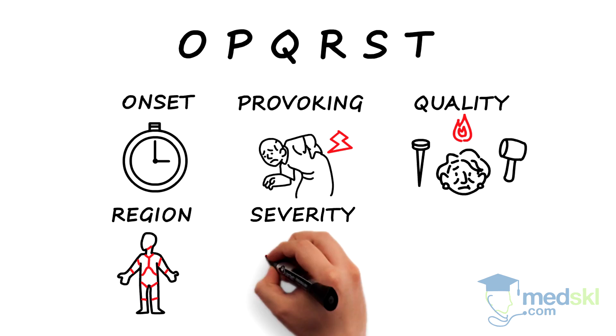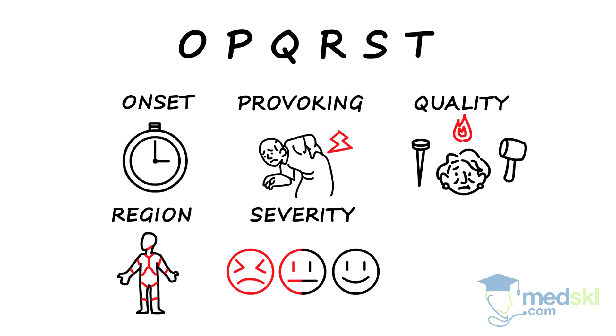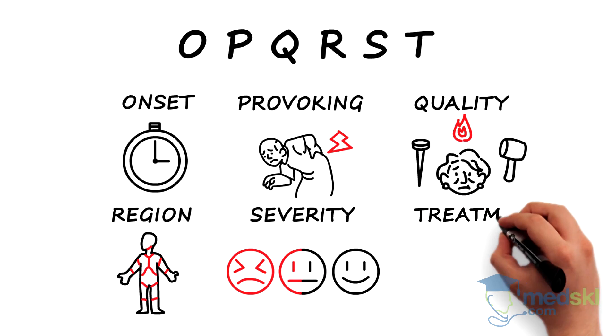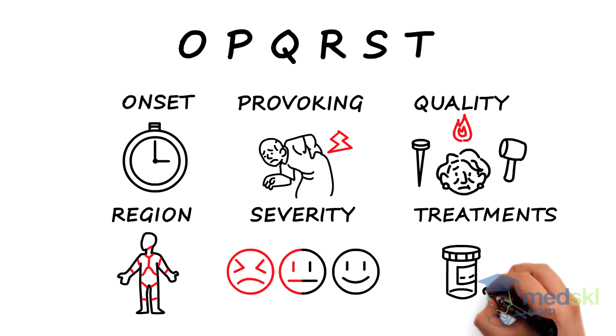S for Severity - from 0 to 10, with 0 being no symptom and 10 being the worst they can imagine. T for Treatments - what have they tried and have they helped?